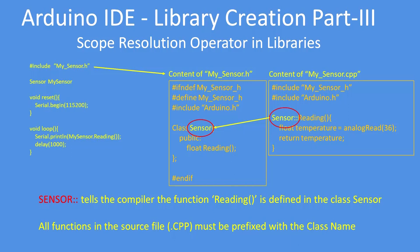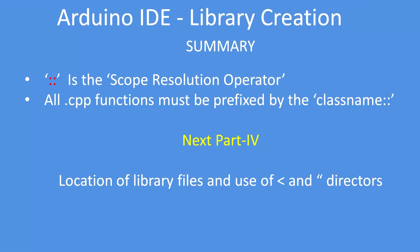I'm trying to depict how the .h file links to the .cpp file, so that when it comes to usage in your sketch, prefixing with the class name — or class name:: if it's used in the scope resolution context — helps define where that value is defined itself.